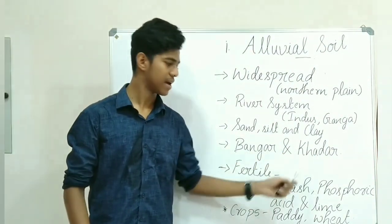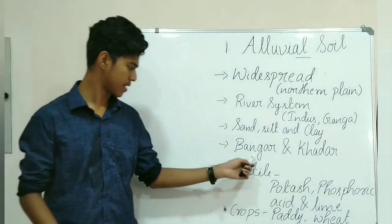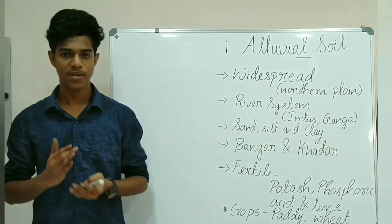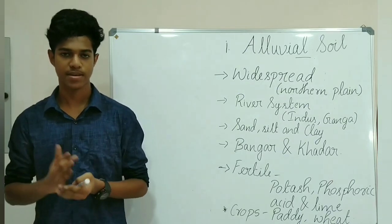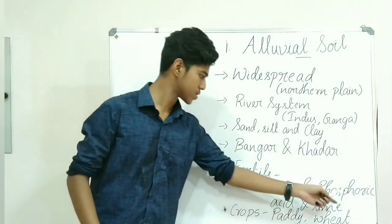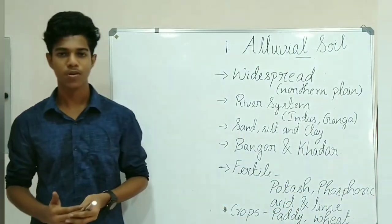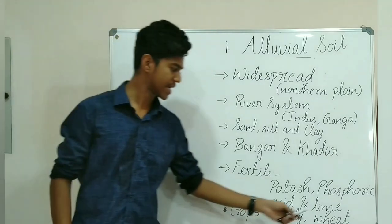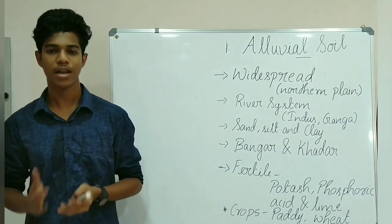The old alluvial soil is called Bhangar and the new alluvial soil is called Khadar. Khadar is more fertile than Bhangar. Alluvial soil is one of the most fertile soils and it is rich in potash, phosphoric acid, and lime. The major crops cultivated in this soil are paddy, wheat, sugarcane, etc.